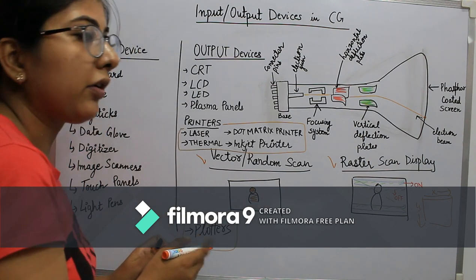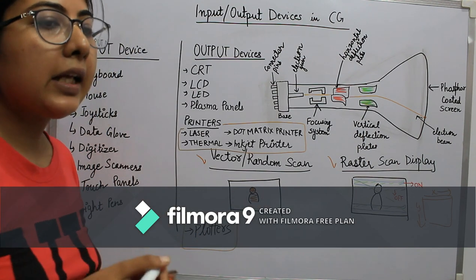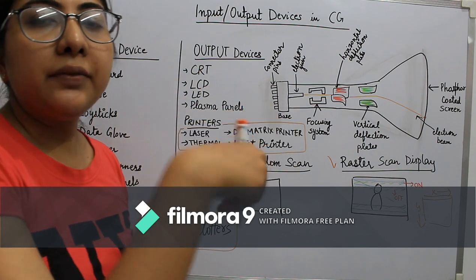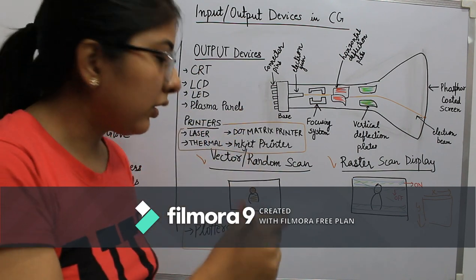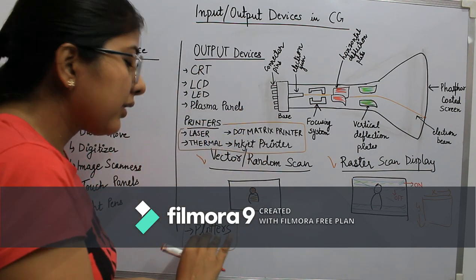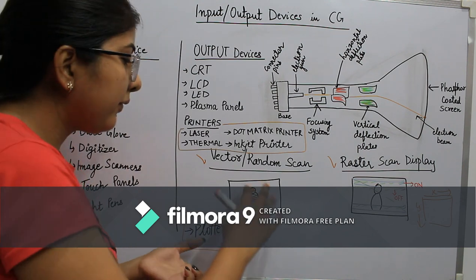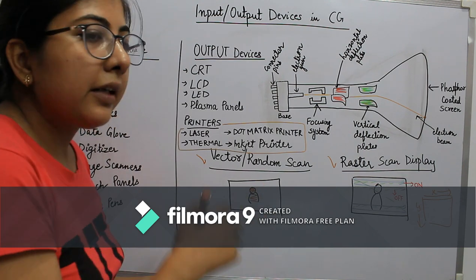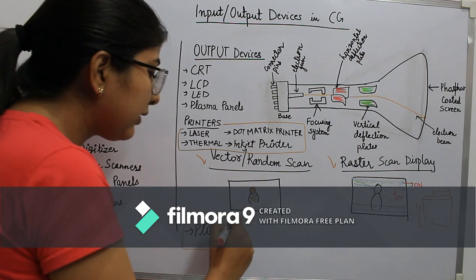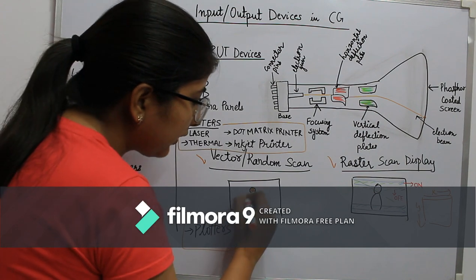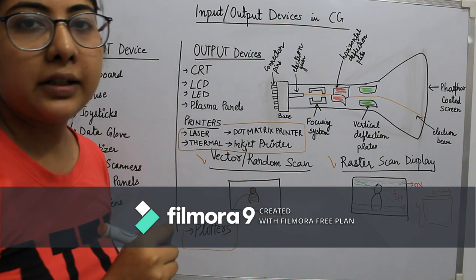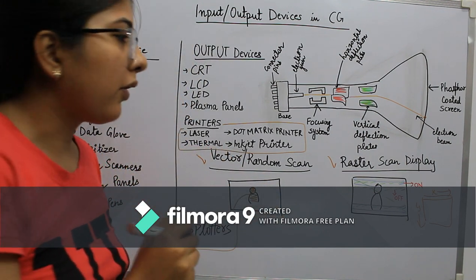In the case of plotters, we have a pen and sheet where we draw the object. When working with plotters, we feed the data and wherever the location is, it switches over the screen and the pen will plot exactly where the object needs to be.